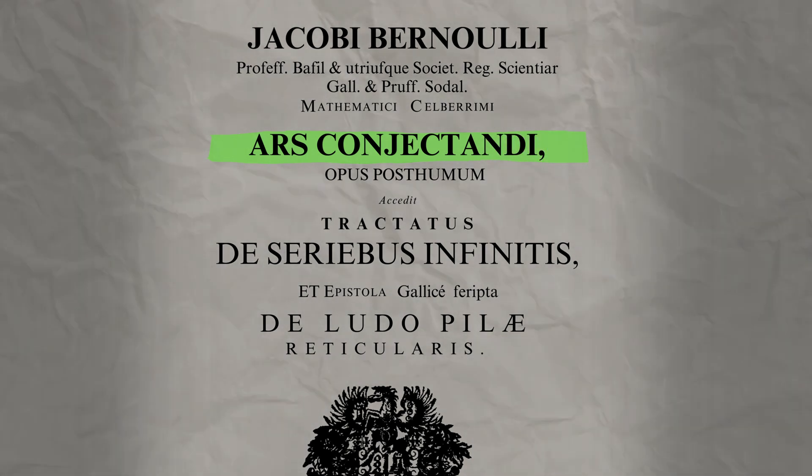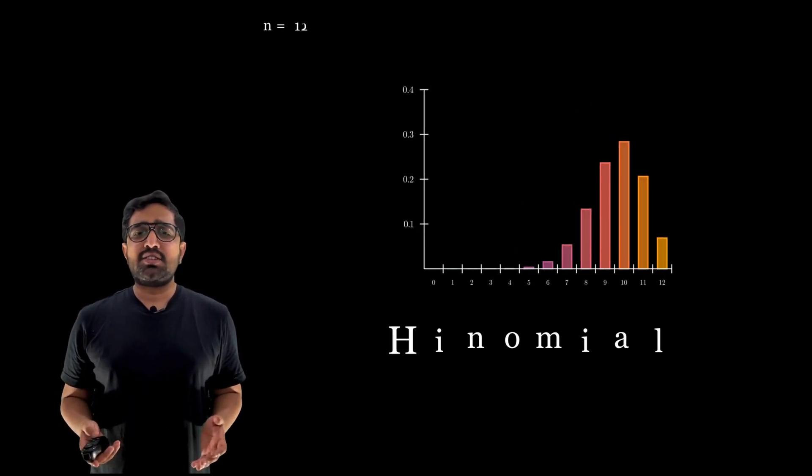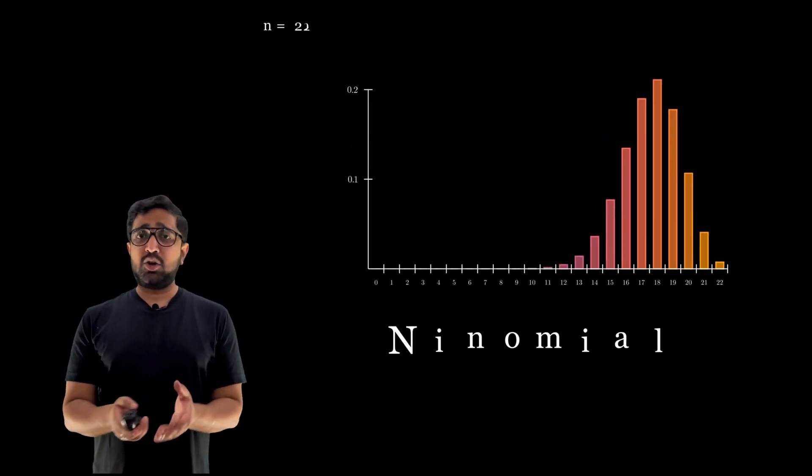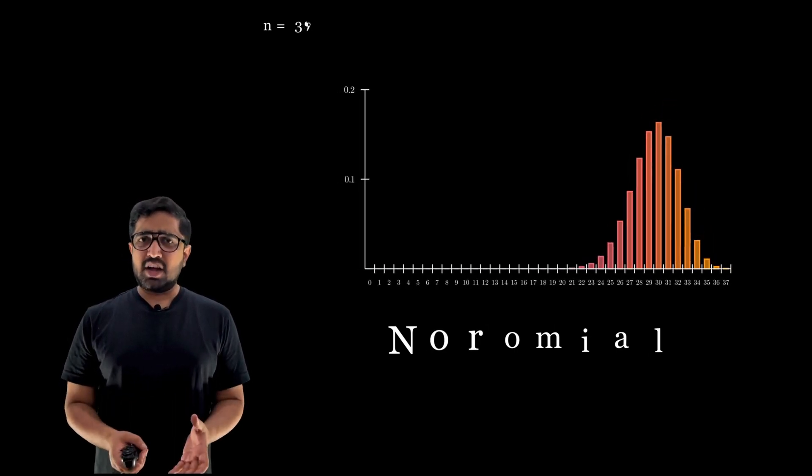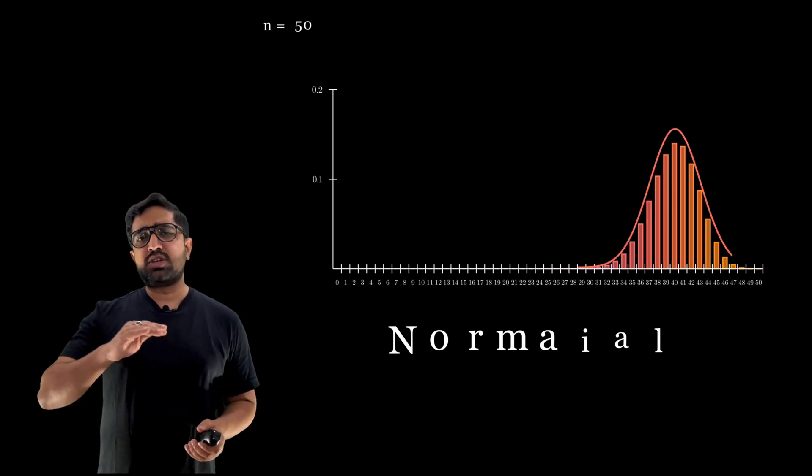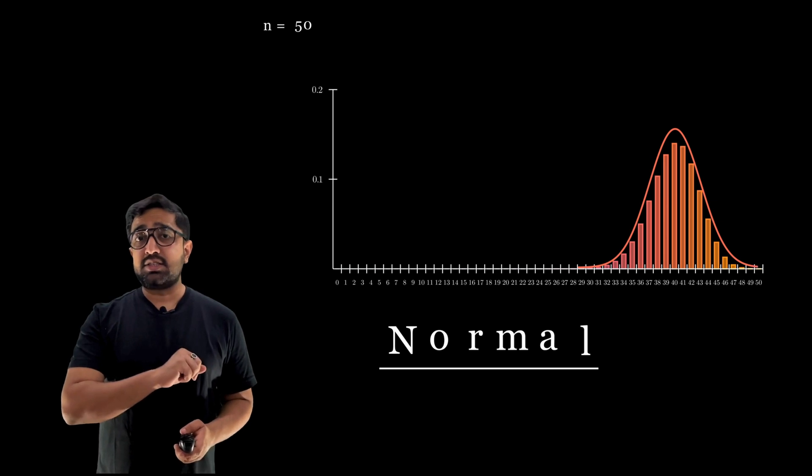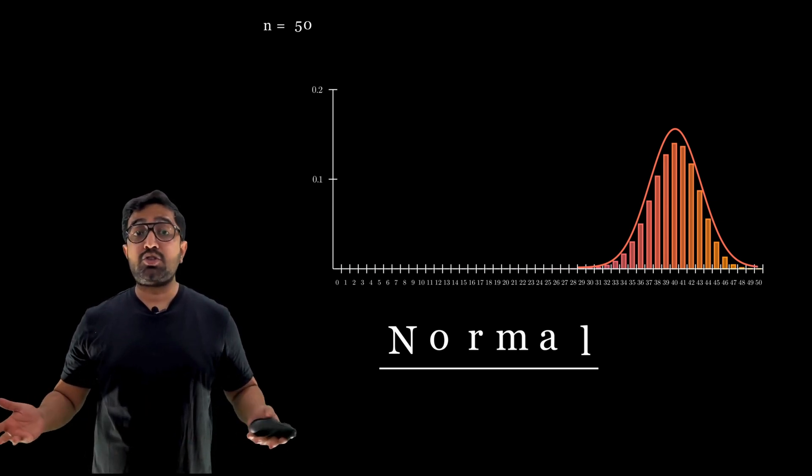Eight years after his death, it still fascinates many how a discrete distribution like the binomial distribution, which deals with finite separate outcomes, transforms into the smooth continuous curve of the normal distribution. To understand this, we need to explore the binomial distribution itself.